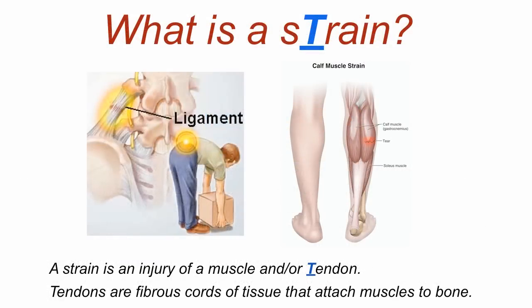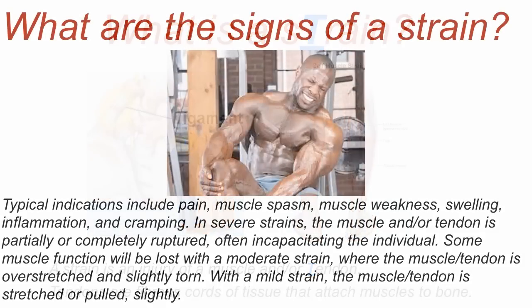What is a strain? A strain is an injury of a muscle and/or tendon. Tendons are the fibrous cords of tissue that attach muscles to the bone. Typical indications of a strain include pain, muscle spasm, muscle weakness, swelling, inflammation, and cramping.